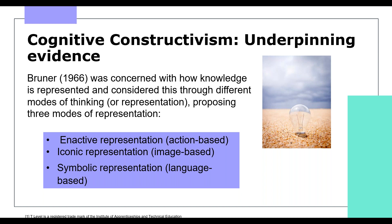Bruner (1966) was concerned with how knowledge is represented, proposing three modes of representation: enactive representation (action-based), iconic representation (image-based), and symbolic representation (language-based). Unlike Piaget, who believed cognition occurred in age-related stages, Bruner suggested cognitive development could be promoted through how it is shared — with an enabling environment and a nurturing adult, often referred to as the more knowledgeable other, being paramount in the cognitive process.